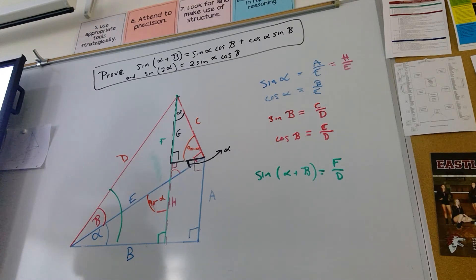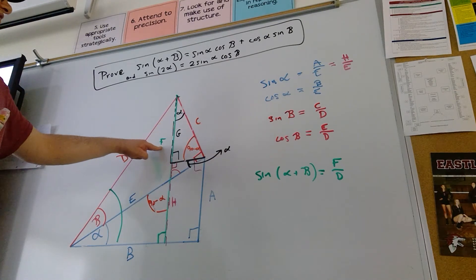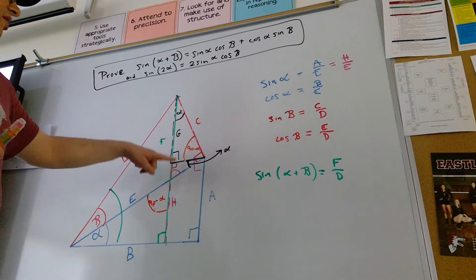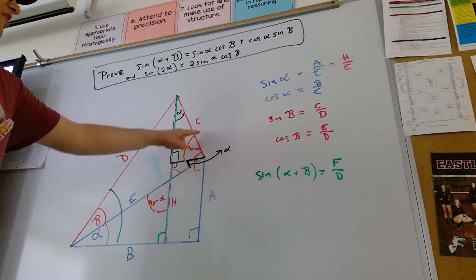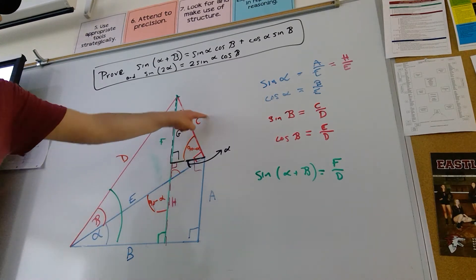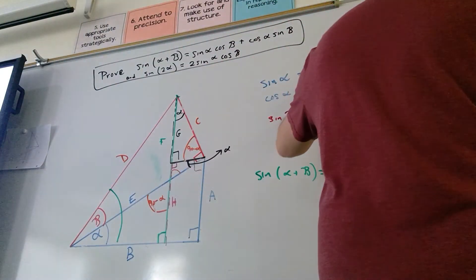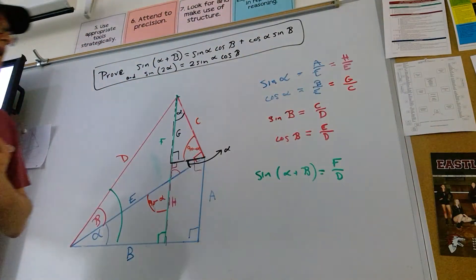What does that allow me to do? Well, let's look at this triangle here. C, this guy, G. That is a right triangle. And the cosine of alpha, based on that triangle, is G over C. So cosine of alpha is G over C. That is going to matter.